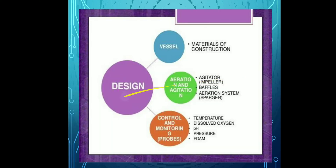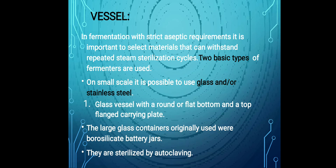When we talk about bioreactor design, there are three categories: first, vessels; second, aeration and agitation; and third, control and monitoring probes. For vessels, we consider the material of construction. For aeration and agitation, components include impellers, baffles, aeration systems, and spargers. Control and monitoring includes temperature probes, dissolved oxygen probes, pH probes, pressure probes, and foam probes.